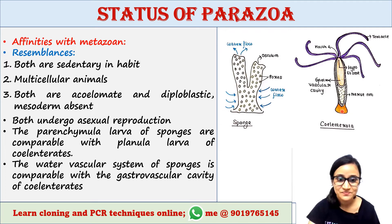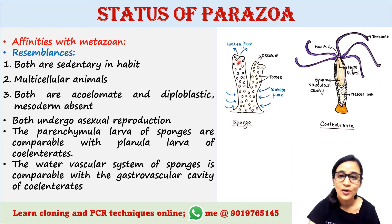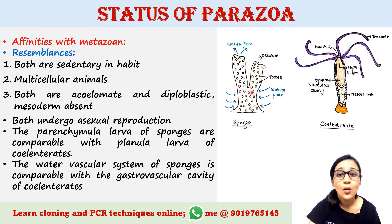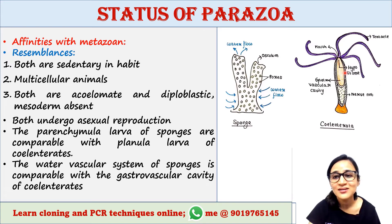The water vascular system of sponges is comparable with the gastrovascular cavity of coelenterates. In the sponge, water enters and flows through the water canal system and exits through the terminal osculum — a large terminal pore. This is comparable with the gastrovascular cavity of coelenterates, which opens through the terminal hypostoma.